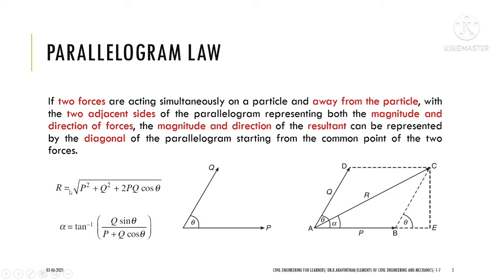The resultant formula is R = √(P² + Q² + 2PQ cos theta), where theta is taken with respect to the horizontal axis. If you need the angle alpha of the resultant force, the formula is: alpha = tan⁻¹(Q sin theta / (P + Q cos theta)). These two formulas are used to identify the resultant force using the parallelogram law.